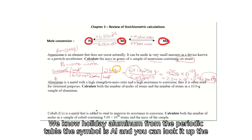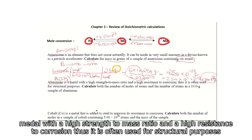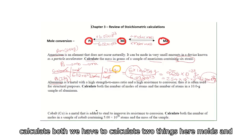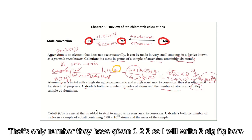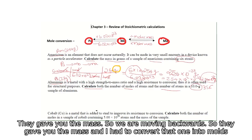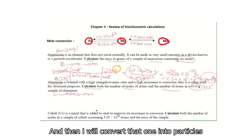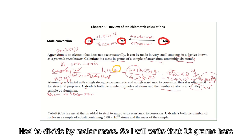Aluminum — symbol Al — has a molar mass of 27 grams from the periodic table. It is a metal with a high strength-to-mass ratio and high resistance to corrosion, often used for structural purposes. We have to calculate two things: moles and number of atoms. They gave 10 grams, which has three significant figures, so the answer should also have three sig figs. Since we're given mass, we move backwards: mass to moles, then moles to particles.